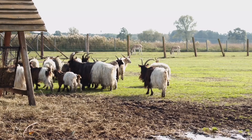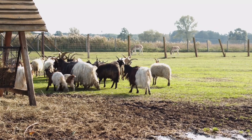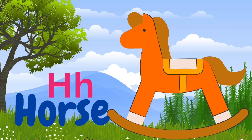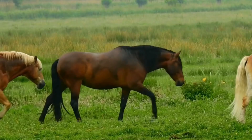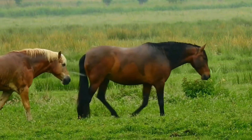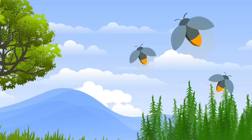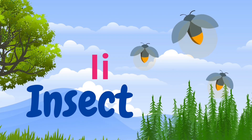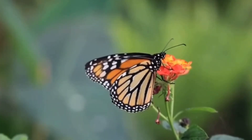G is for goat. G, g — goat. H is for horse. H, h — horse. I is for insect. E, e — insect.